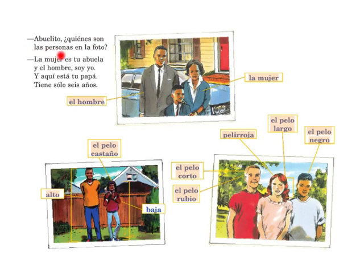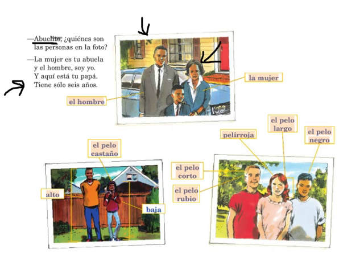Abuelito, ¿quiénes son las personas en la foto? You guys will remember abuelito means grandfather, and when you add that -ito to the end it means little or someone that you really care about — like dear grandfather. ¿Quiénes son las personas en la foto? — Who are the people in the picture? Y él responde: la mujer es tu abuela y el hombre soy yo. La mujer means the woman and el hombre is a man. So he says the woman is your grandmother and the man is me.